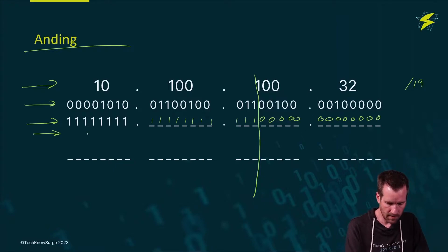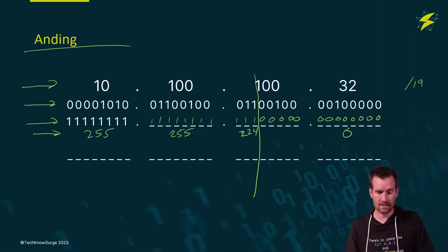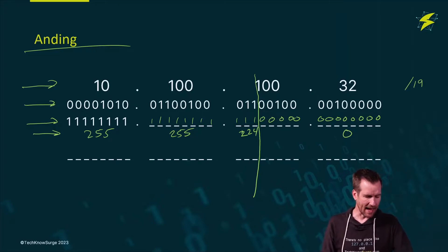If I were to figure out the decimal form, this would be 255.255.224.0 is the answer there. And now let's take a look at anding.